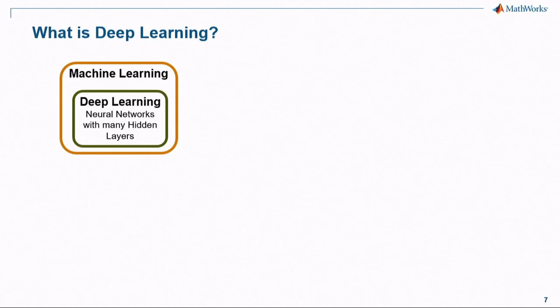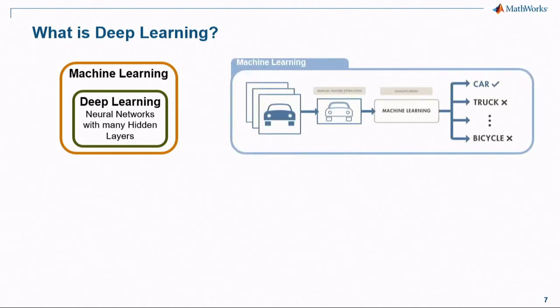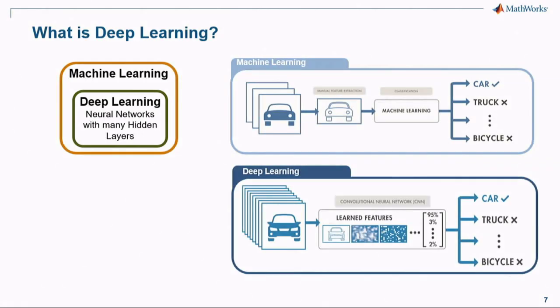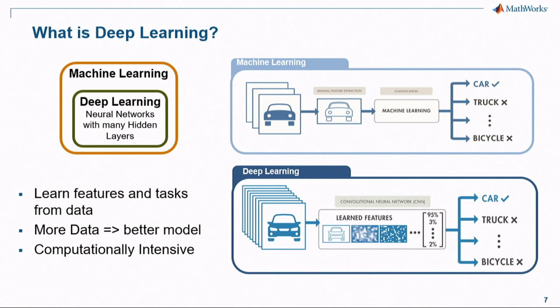In terms of deep learning, let's put that in perspective since we're talking about all of this together. Deep learning is basically a subset of machine learning — it's just deeper. It's a neural network with more layers, and generally you don't have to do as much data preparation, but you tend to need more data to train the model. We'll generally keep it towards classical machine learning algorithms, but if people are interested, ask questions — we can certainly talk about deep learning.